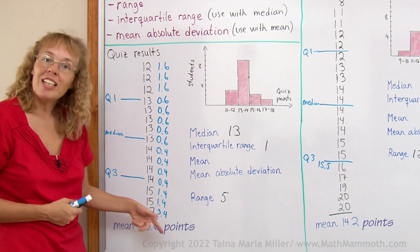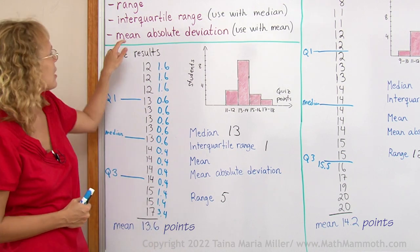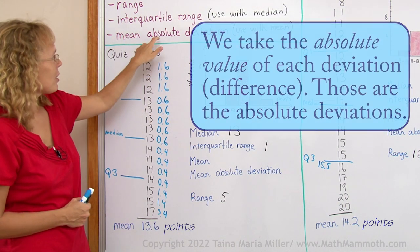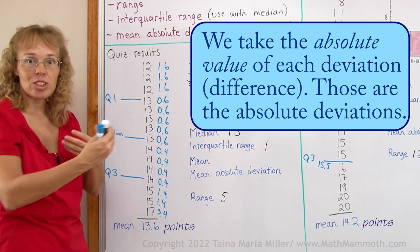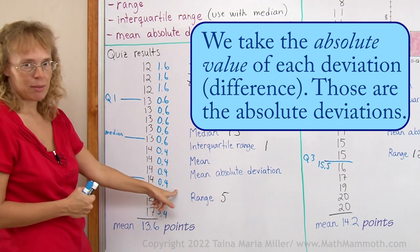You add these together and divide by however many they are. You take the average or the mean of those. That's why it says mean here or average. And the word absolute refers to the fact that we are taking the absolute difference or the absolute deviation from the mean instead of taking some of them negative and some of them positive.